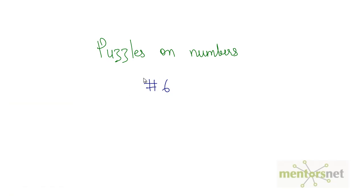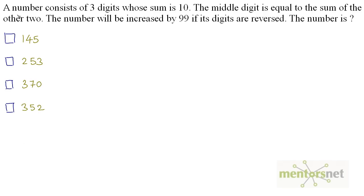This is video number 6 on Puzzles on Numbers. Let's get started with the first question. A number consists of three digits whose sum is 10. The middle digit is equal to the sum of the other two. The number will be increased by 99 if its digits are reversed. Find the number.